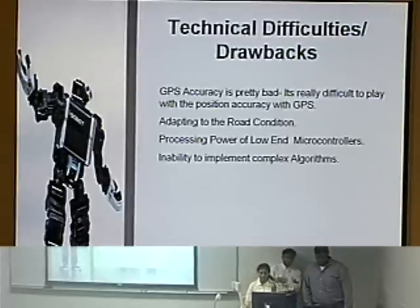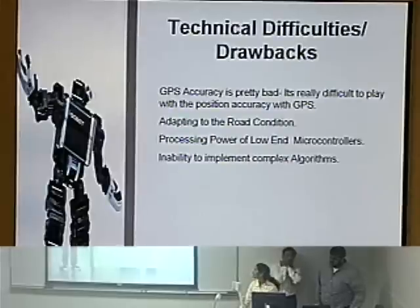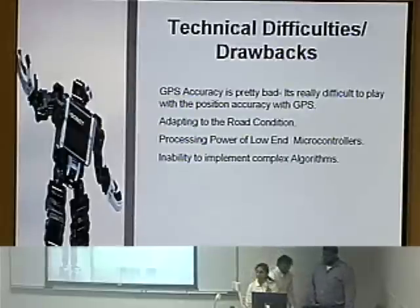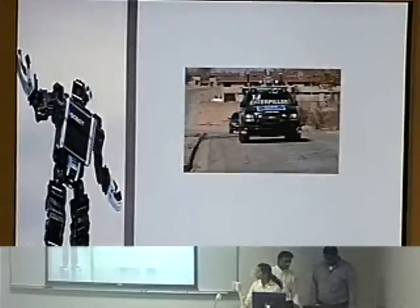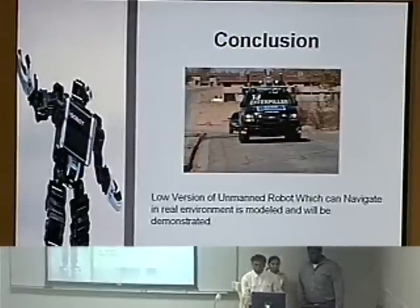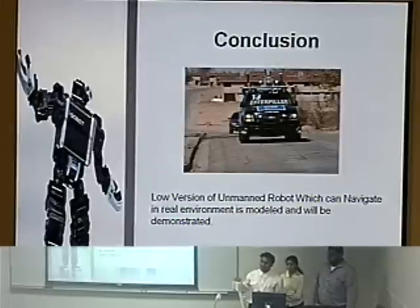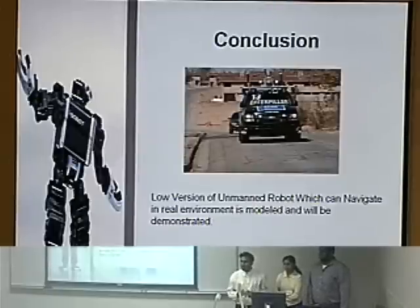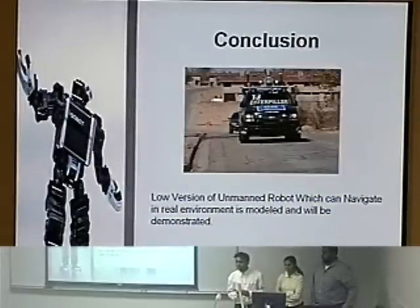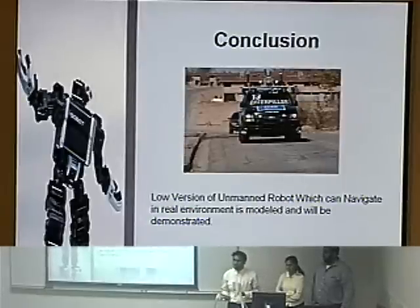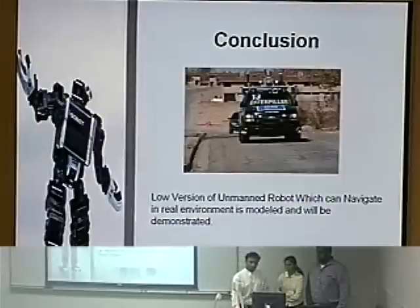The technical difficulties and drawbacks: GPS accuracy is pretty bad, making it difficult to work with position accuracy. The camera cannot find door junctions, and the crossing power of the low-end microcontrollers results in the inability to implement complex algorithms. As shown in the DARPA challenge image, autonomous navigation with unmanned vehicles is the ultimate goal, but using this onboard vision system and low-end microcontrollers, it is not possible to implement those kinds of algorithms. We have our own limitations — we can't handle complex road scenarios with junctions or multiple colors. This is a low version of an unmanned vehicle operating in a semi-controlled environment. This concludes our presentation.